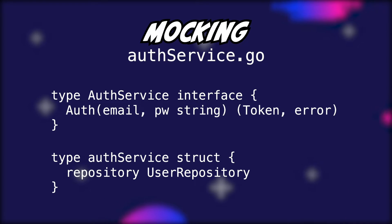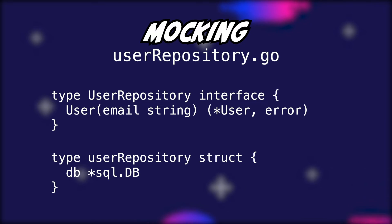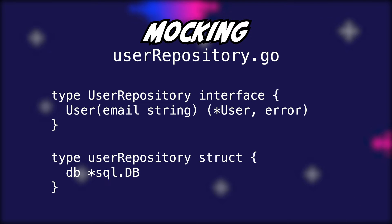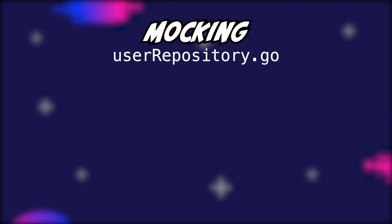The user repository itself could have a simple user function which retrieves the user by its email address. Since the data is stored in the database, the corresponding user repository struct must contain a database connection. So far so good — but now let's talk about the fun stuff: testing.